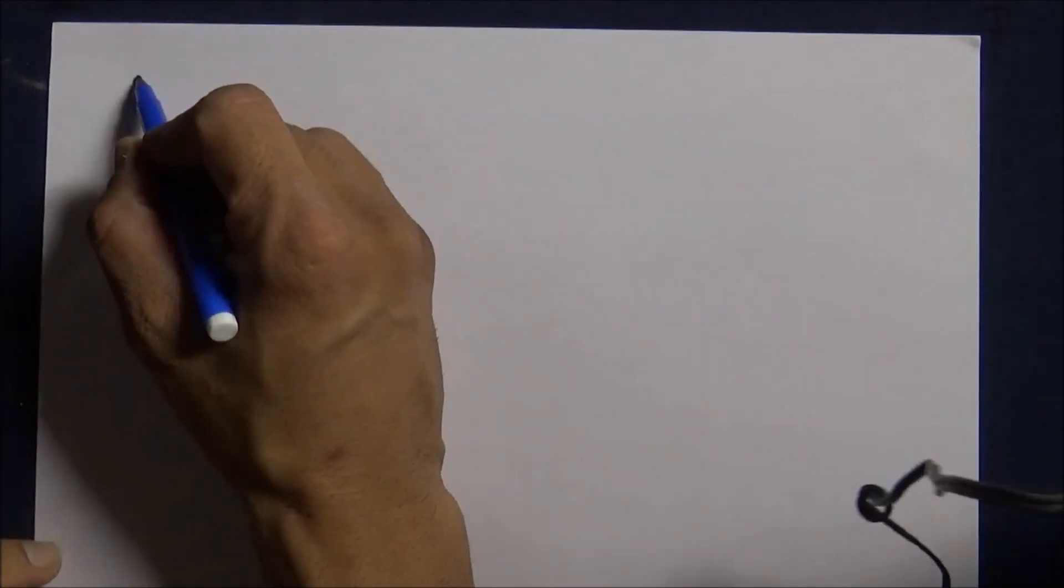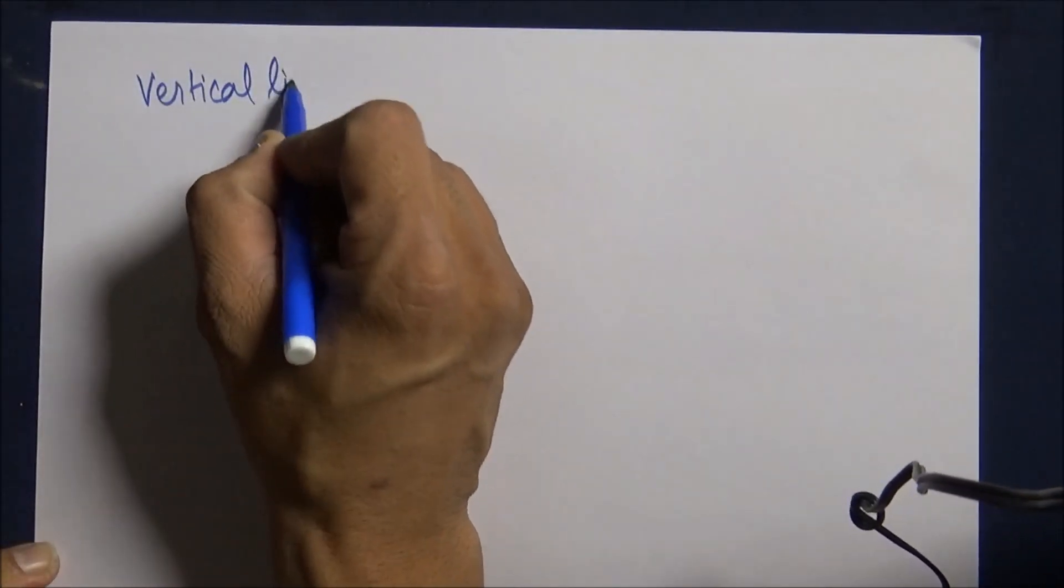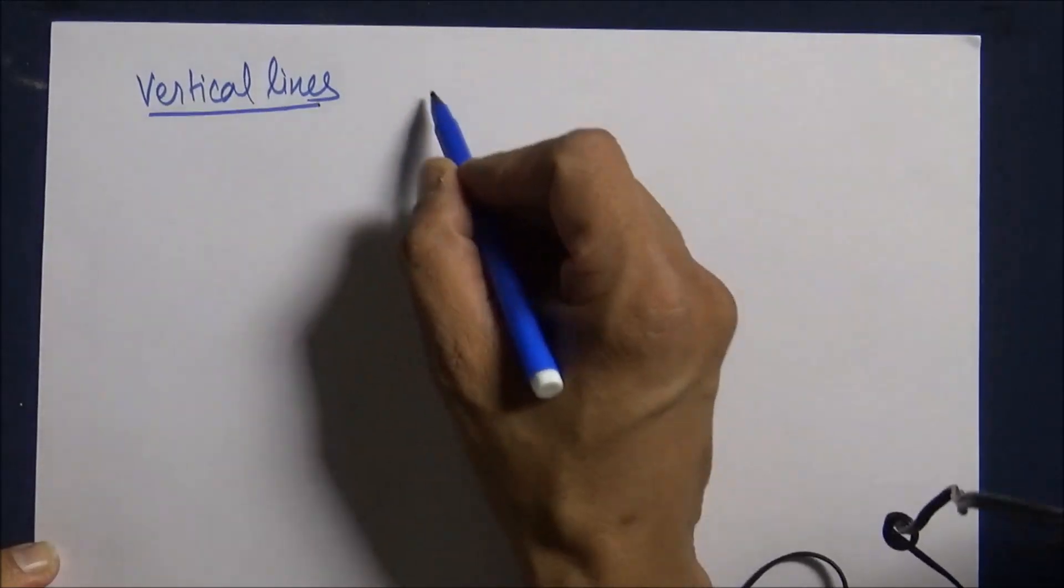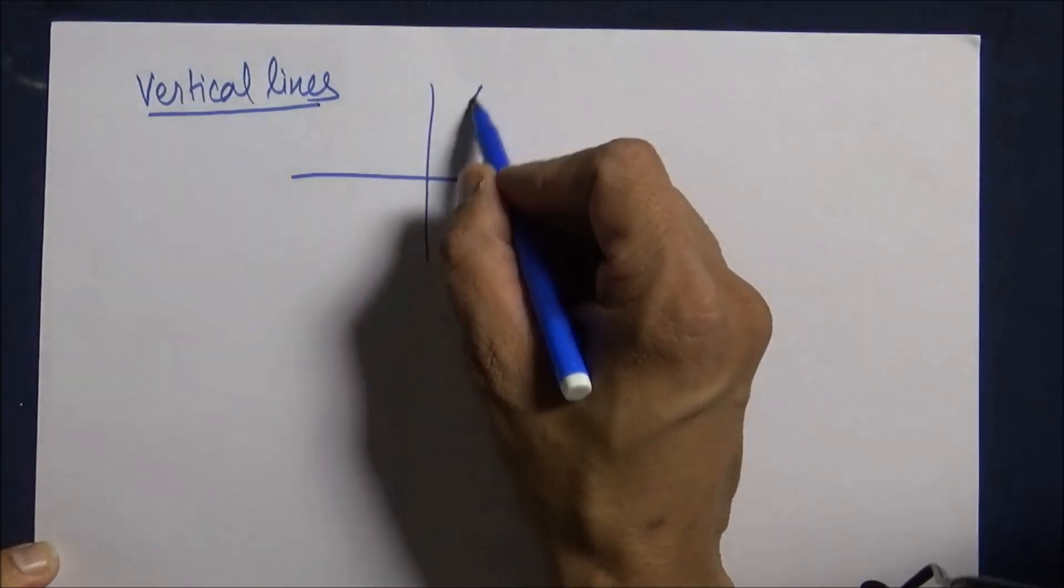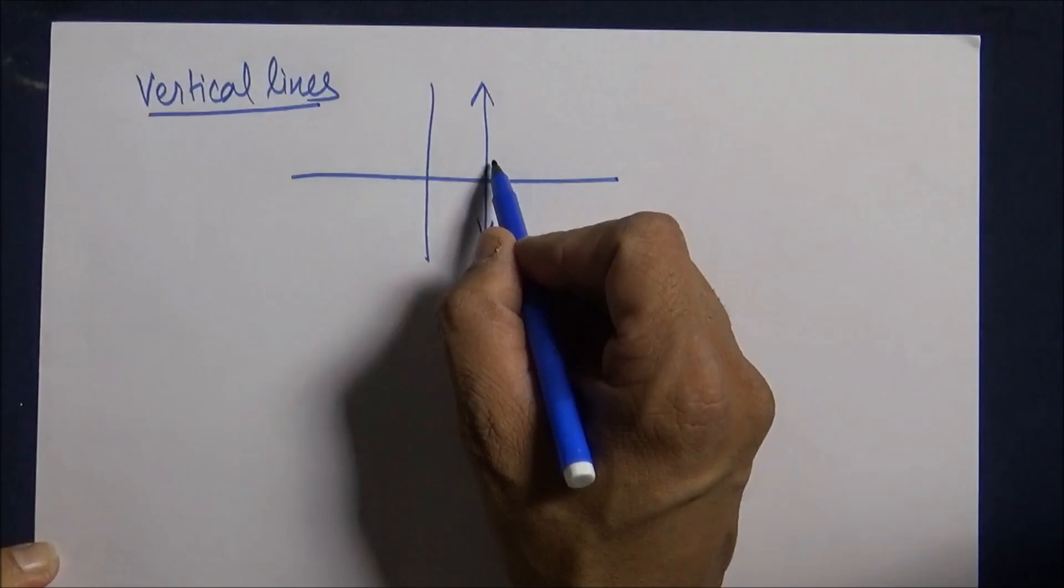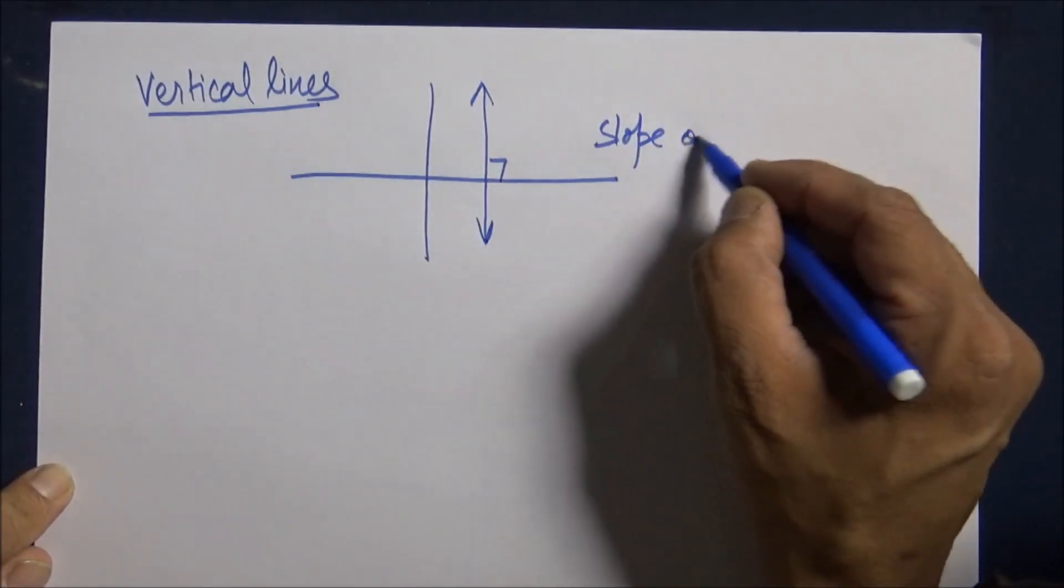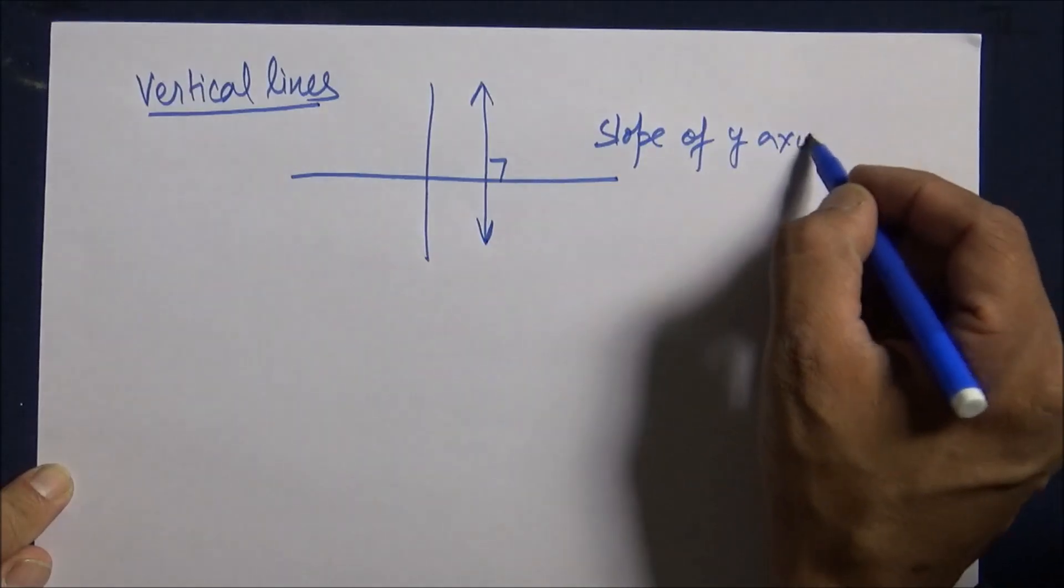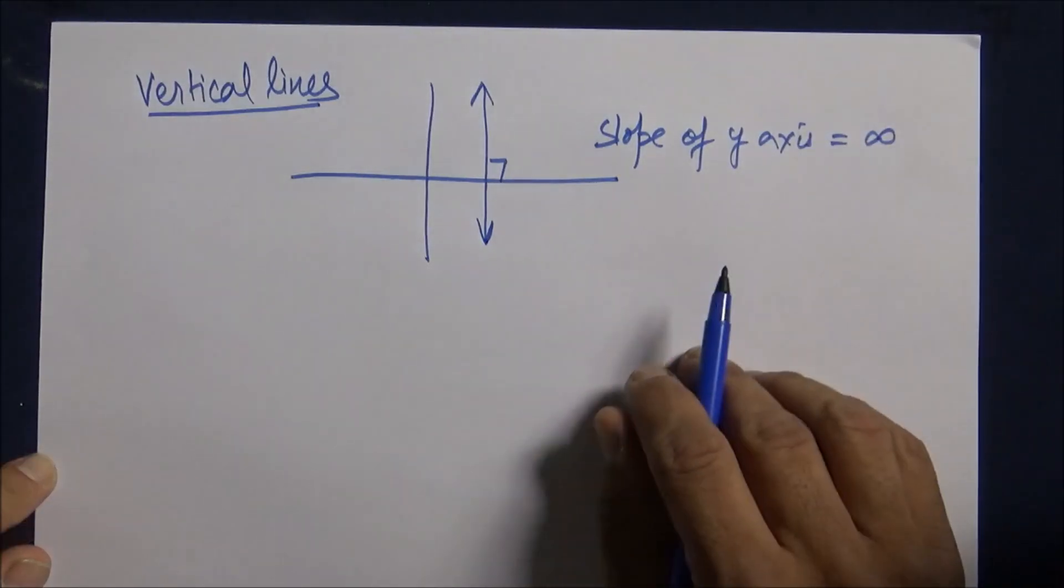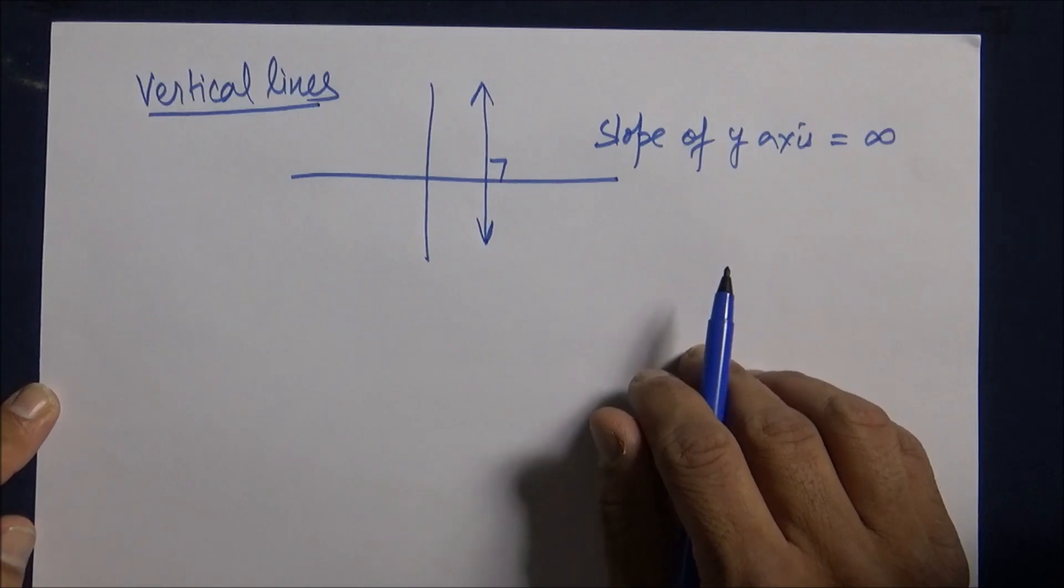Now, I am going to take you to vertical lines. Vertical lines are perpendicular to the x-axis, that is they are parallel to the y-axis. We all know that slope of y-axis is infinity. So how can we find the equation for the vertical lines?